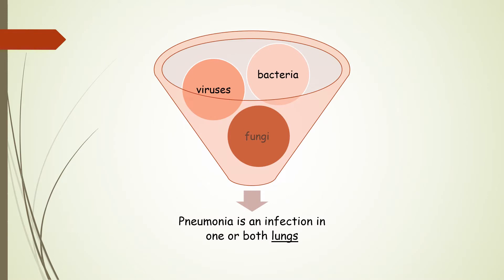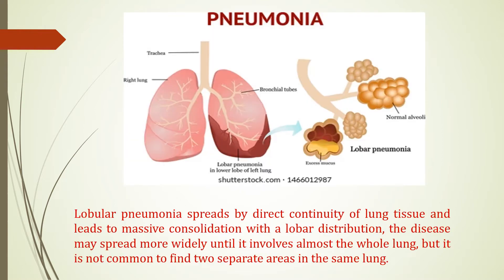As you know, pneumonia is an infection in one or both lungs. The causes of pneumonia are viruses, bacteria, and fungi. Let's identify the meaning of the word lobular pneumonia. Lobular pneumonia spreads by direct continuity of lung tissue and leads to massive consolidation with a lobular distribution.